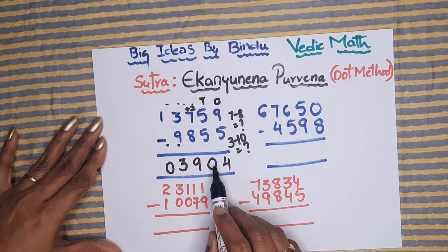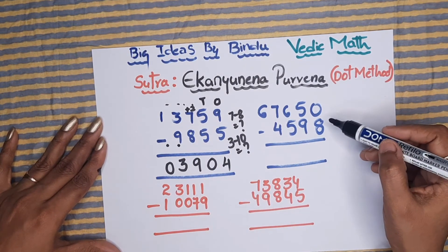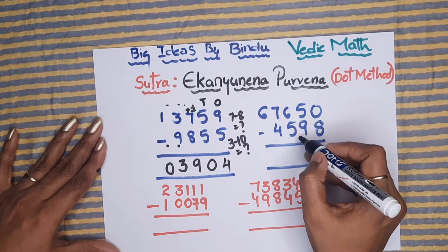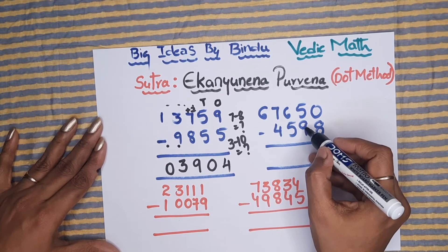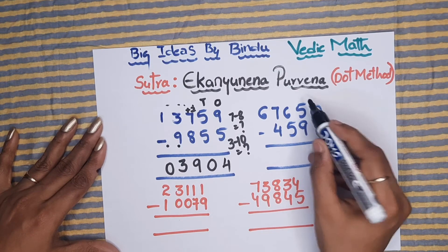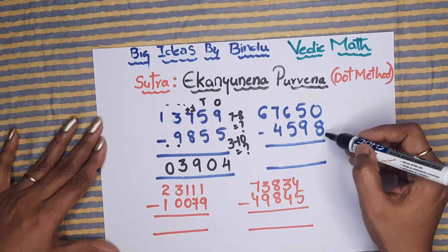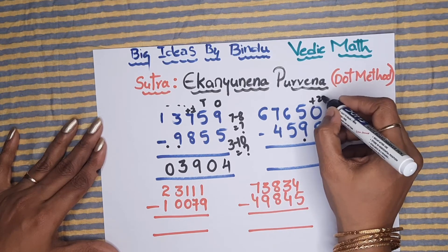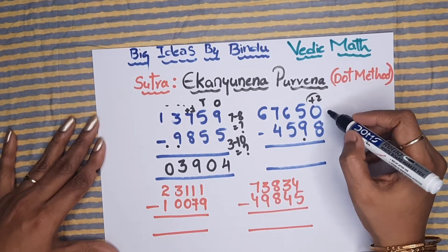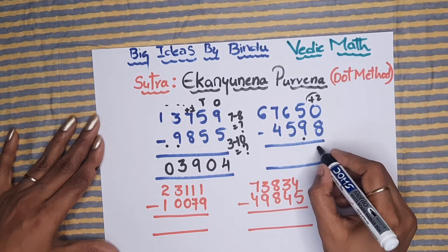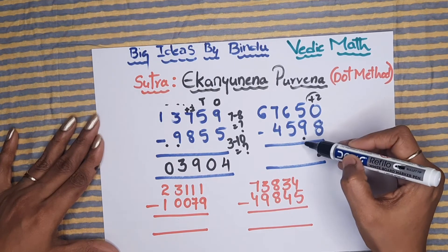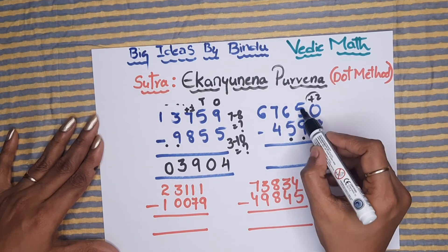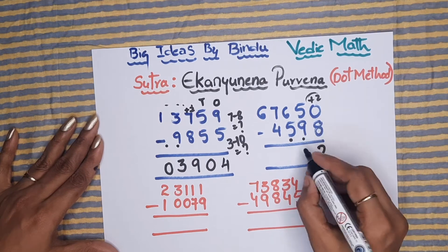The answer to the first sum is 3904. Moving to the second sum: 0 minus 8 is not possible, so we keep a dot. The friend of 8 is 2, so we add 2 to the minuend digit: 0 plus 2 equals 2. Next, 5 minus 10 — the dot from before makes it 10 — which is not possible, so we keep another dot. Since the subtrahend digit is 0, there is no friend, so we directly bring down 5.